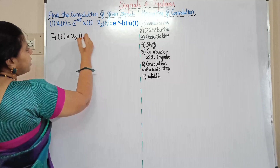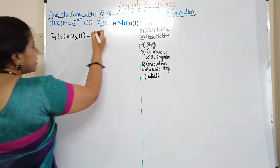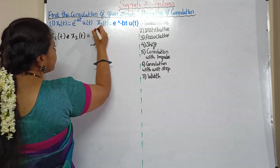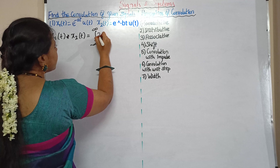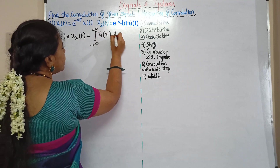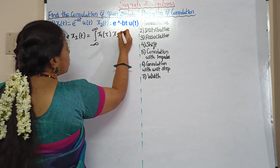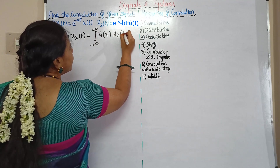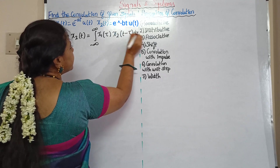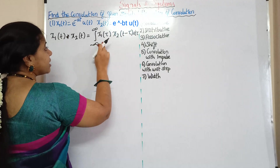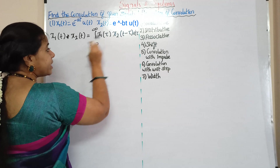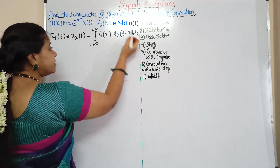The convolution formula is the integral from minus infinity to infinity of x1 of tau into x2 of t minus tau, d tau. For the first signal, t equals tau; for the second signal, t equals t minus tau.